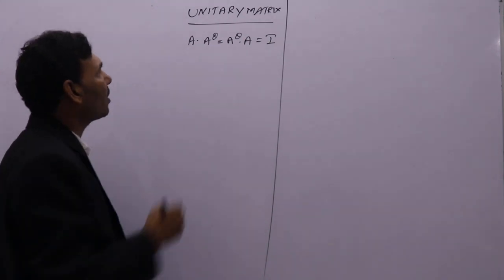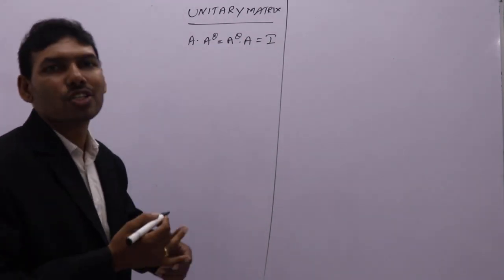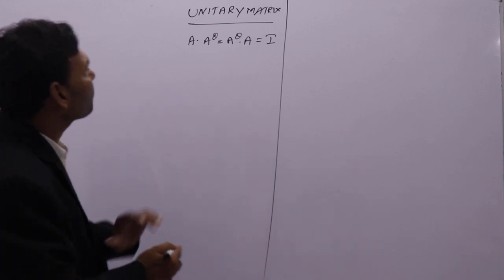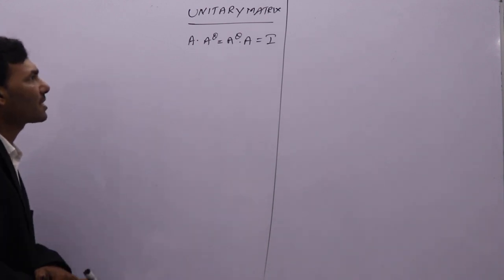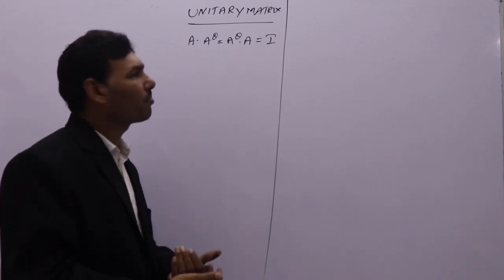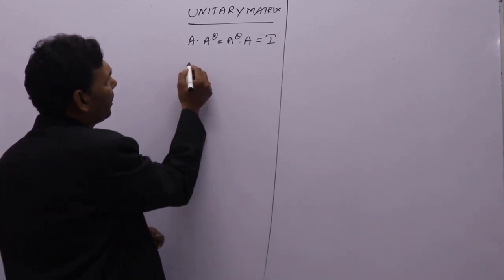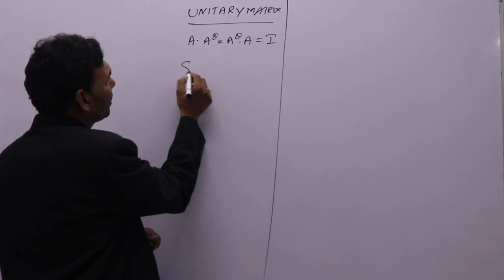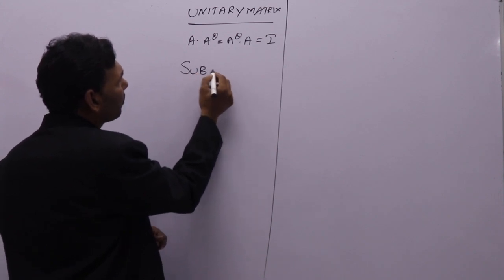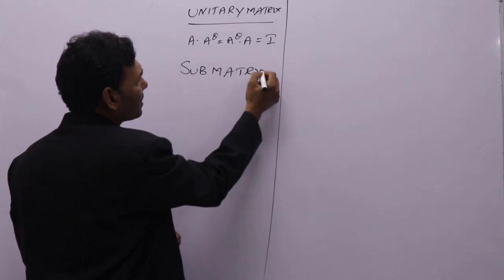So these three — Hermitian, Skew Hermitian, and Unitary matrix — are called complex matrices. These are types of matrices. Next, coming to our actual topic: you all know what a matrix is. Now I am going to discuss what is sub-matrix.